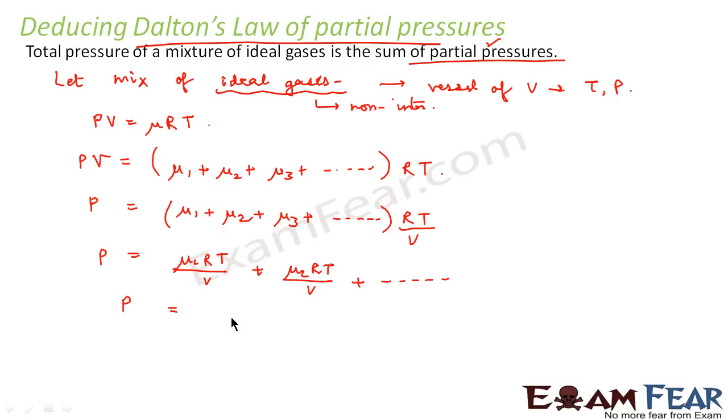So this is nothing but μ1 RT by V is P1. Similarly, μ2 RT by V is P2 and so on. So what is this P1? This is nothing but partial pressure of gas 1. Similarly, this is of gas 2 and so on. So what do we see? We see that the total pressure due to the mixture of gases is equal to the sum of the partial pressures of the gases.